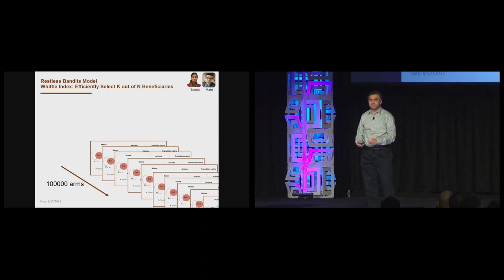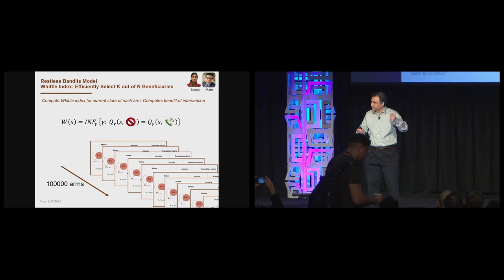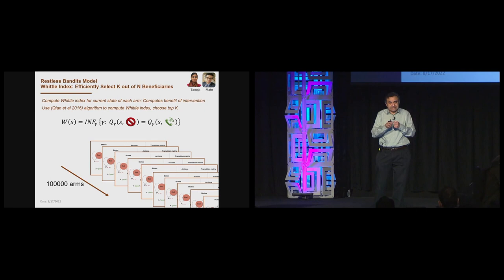We have actions of intervening, giving a service call, or no intervention, which is a passive action. And now we have transition probabilities based on if we don't intervene, if there's a passive action, then the probability of going from a bad state not listening to a good state listening is 0.2. But when you give a service call, that probability may jump up to 0.8. In reality, of course, we have 100,000 arms. You can imagine there's 100,000 of these MDPs, and you have to decide which 1,000 to pull. This problem is known to be PSPACE hard.